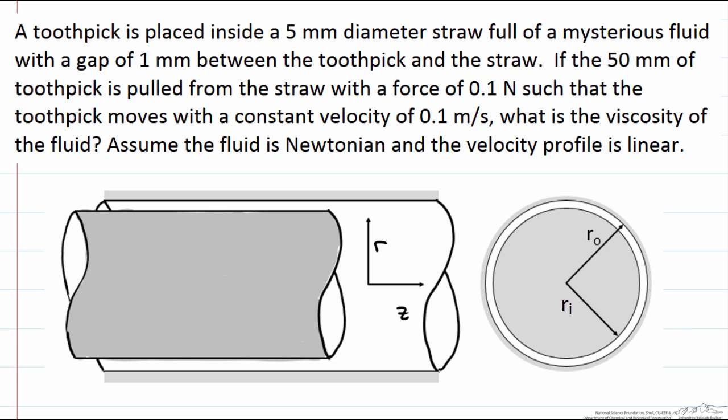Now if the 50 mm of the toothpick is pulled from the straw with a force of 0.1 newtons such that the toothpick moves with a constant velocity of 0.1 m per second, what is the viscosity of the fluid?